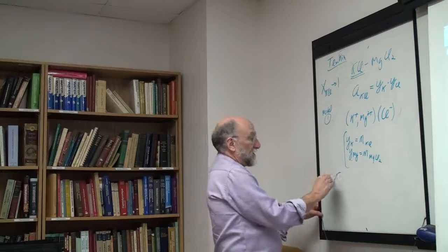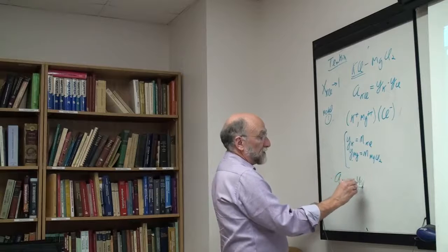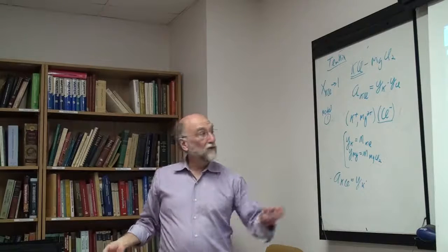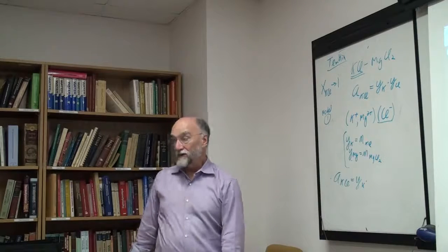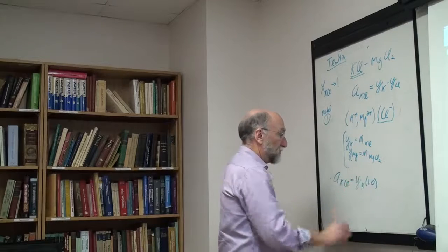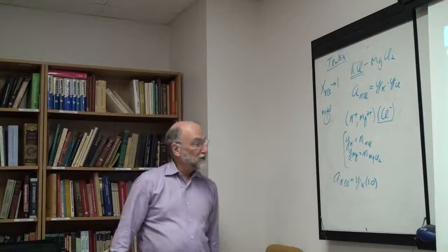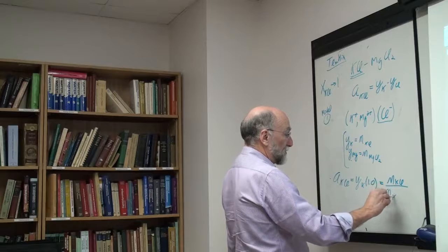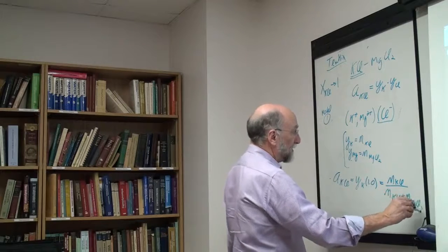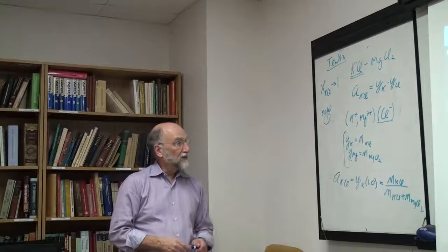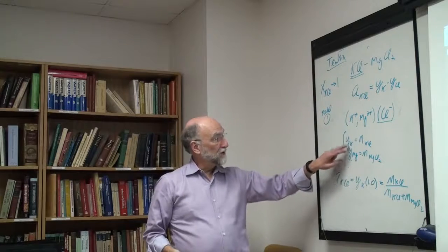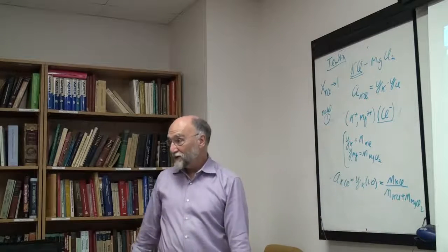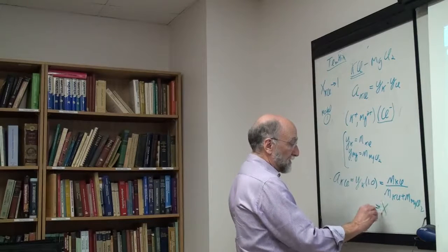This is the Temkin model for the liquid — we don't talk about vacancies. The number of cation sites are simply equal to the number of cations; the number of anion sites equal to the number of anions. So the activity of KCl is the site fraction of potassium. The site fraction of chlorine is one, because all anion sites are occupied by chlorine. So it's just the potassium and magnesium that are mixing, and this equals the number of moles of KCl divided by the number of moles of KCl plus the number of moles of MgCl2, which is just equal to the mole fraction of KCl.